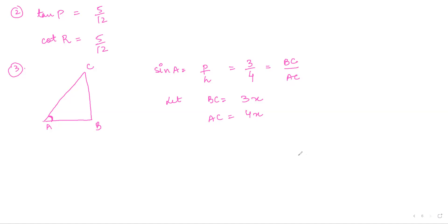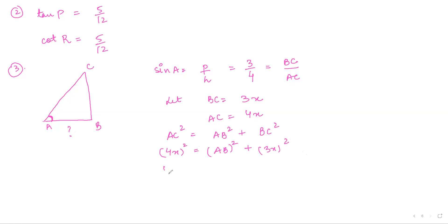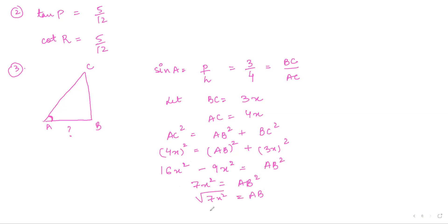The first thing is to find the value of AB using Pythagoras theorem. AC square equals AB square plus BC square. So 4x whole square equals AB square plus 3x whole square. That gives 16x square minus 9x square equals AB square, so AB square equals 7x square. Therefore AB equals root 7 times x.